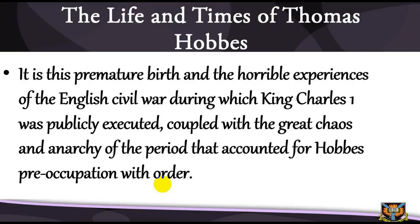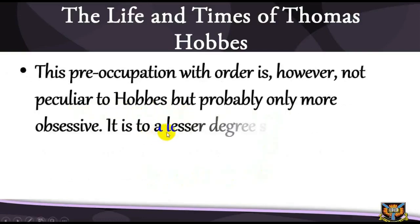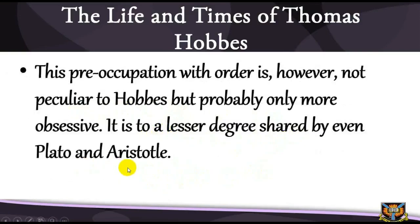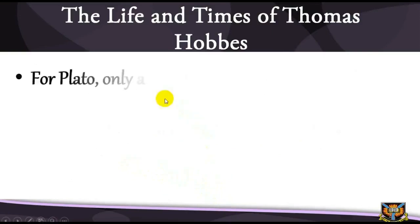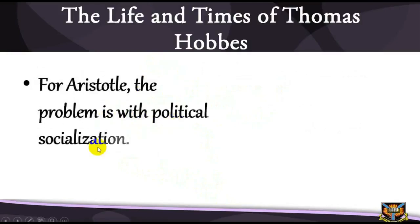This preoccupation with order is however not peculiar to Hobbes, but probably only more obsessive. It is to a lesser degree shared by even Plato and Aristotle — they differ only in their causes and solutions. For Plato, only an ideal state headed by a philosopher-king can enthrone justice and happiness in the state and so make for stability. For Aristotle, the problem is political socialization. But to Hobbes, the power of the sovereign must be that of a Leviathan, to be able to contain the excesses of individuals and the containing powers of innumerable corporate, religious, economic and social forces within the state.